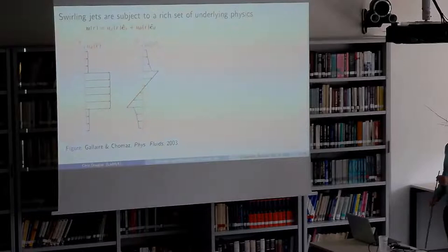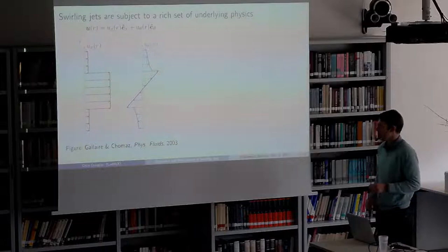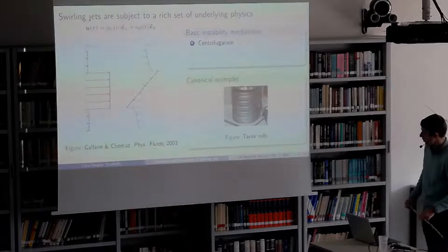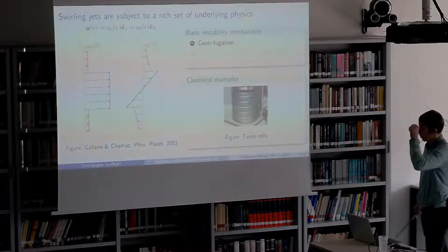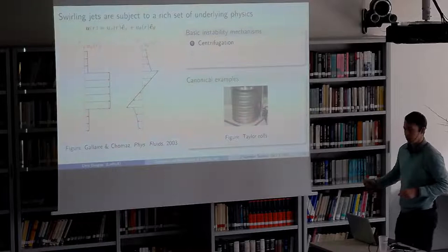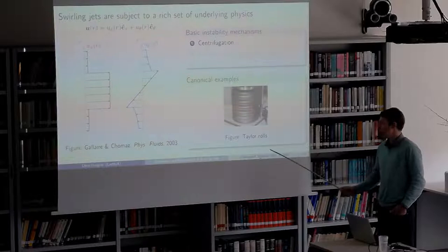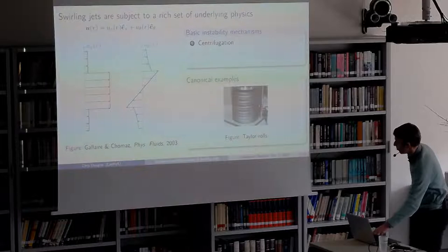Swirling jets are also really interesting not just for applications but in terms of the underlying physics, because they have a lot of distinct instability mechanisms. I'll go through the three big ones. These are all sort of separate but in swirling jets they really interact and are not exactly separable. The most basic one is centrifugal instability — the canonical example being Taylor-Couette flow with rotating cylinders, where you see centrifugal instabilities that manifest as Taylor rolls.